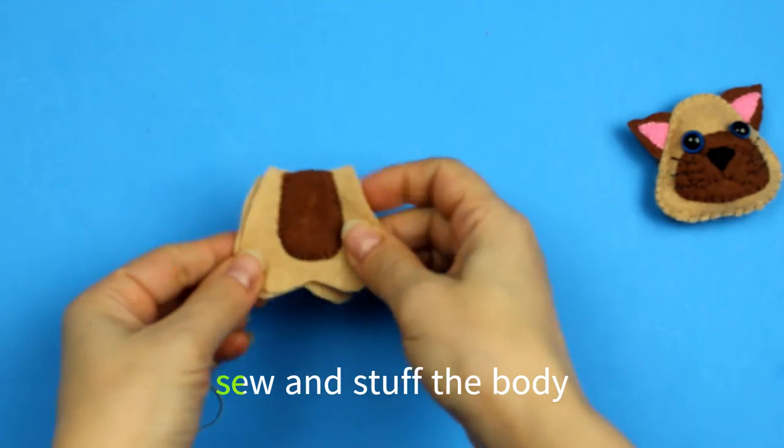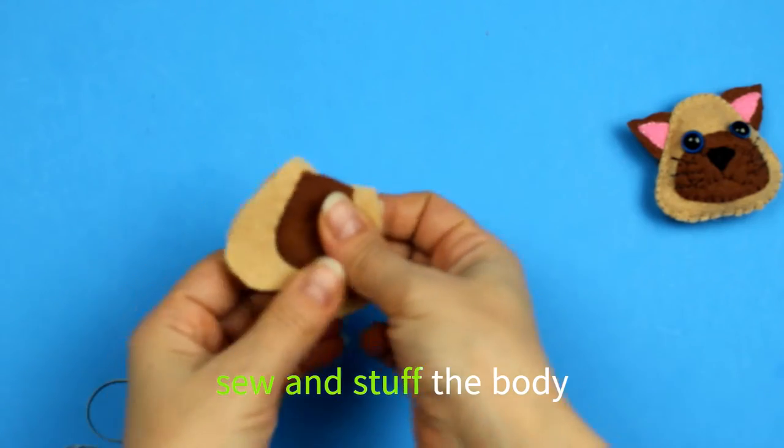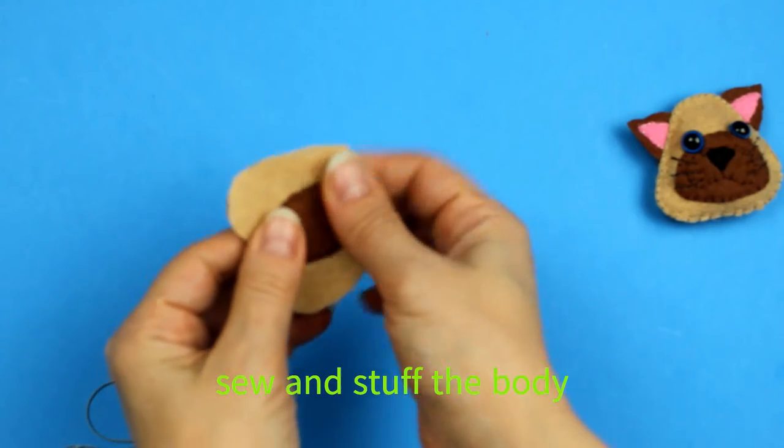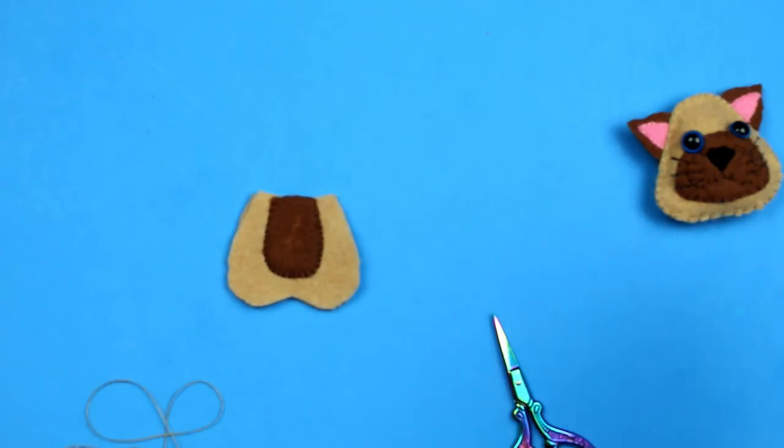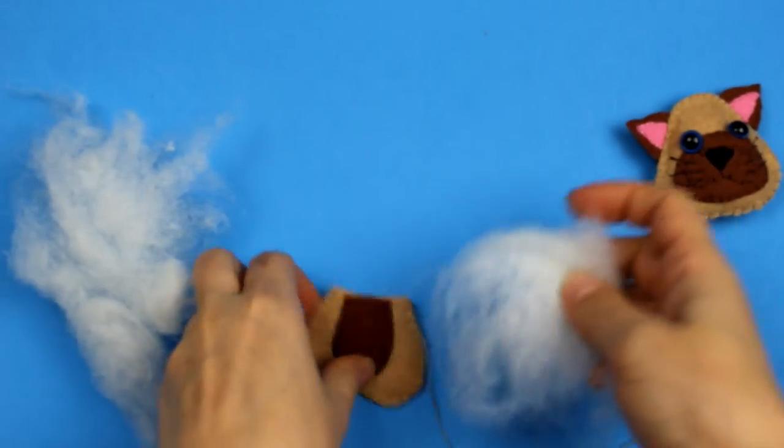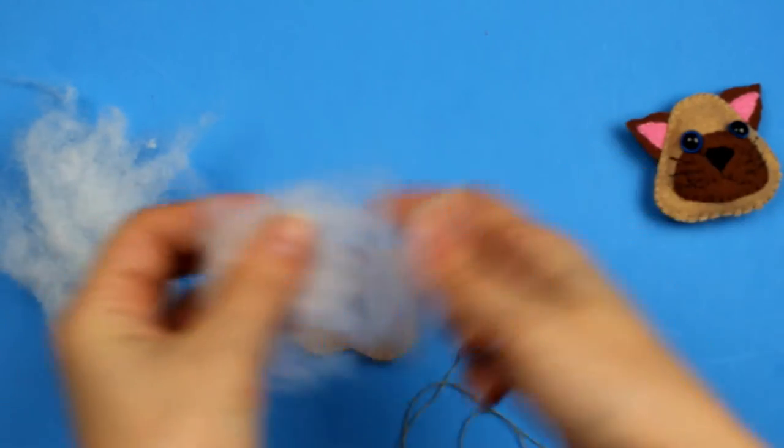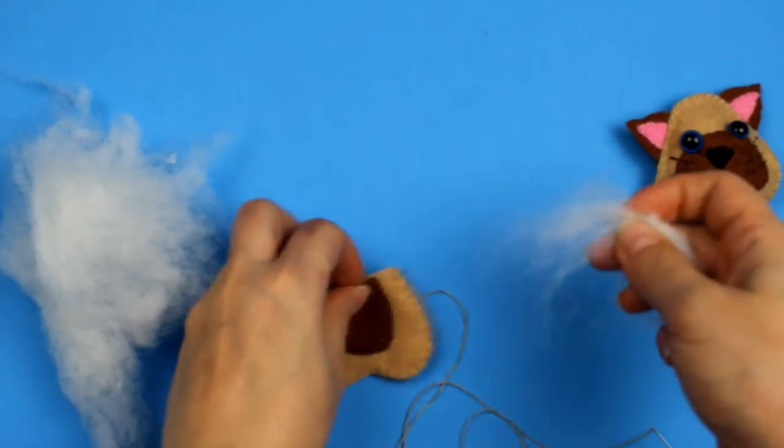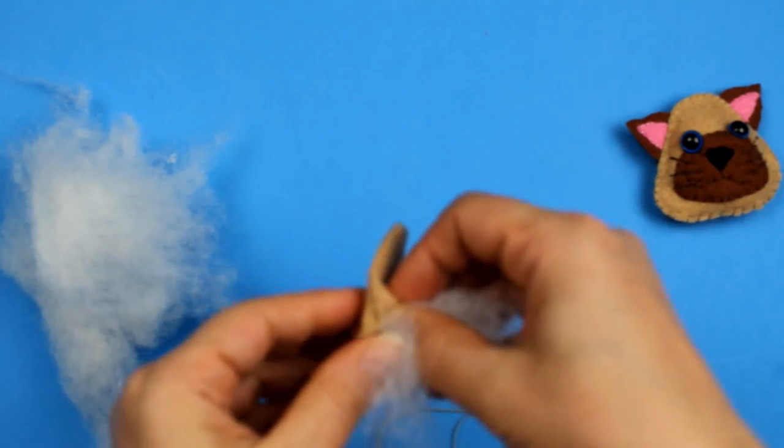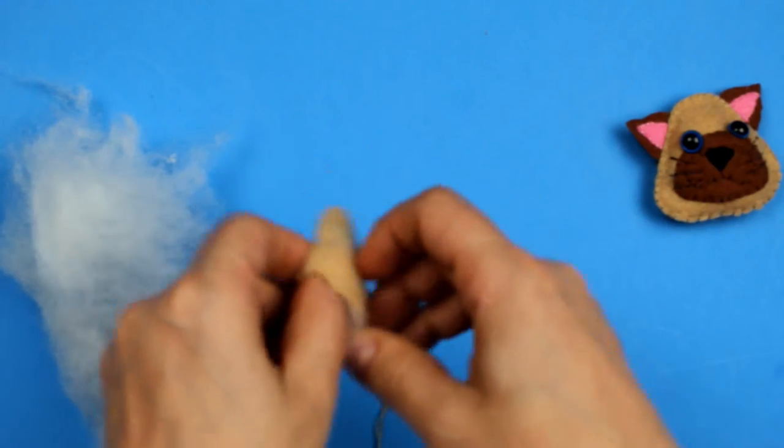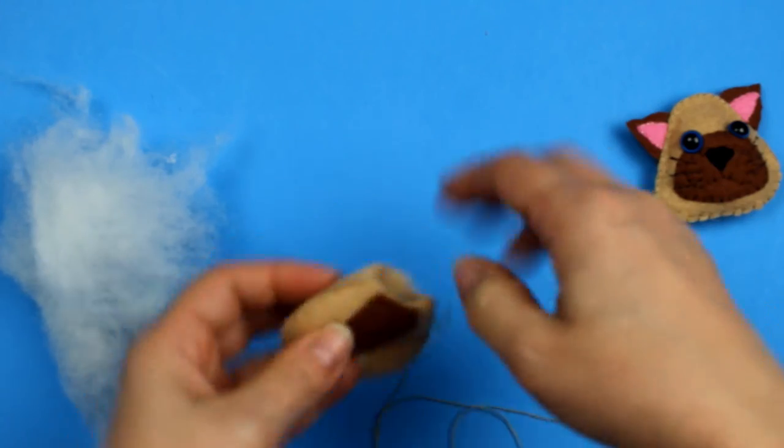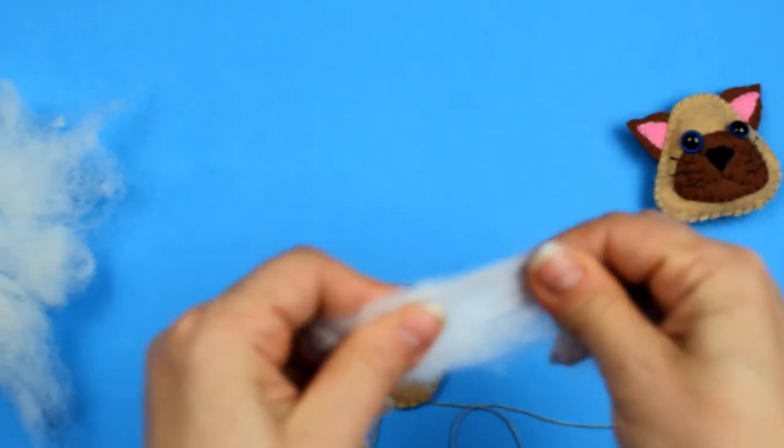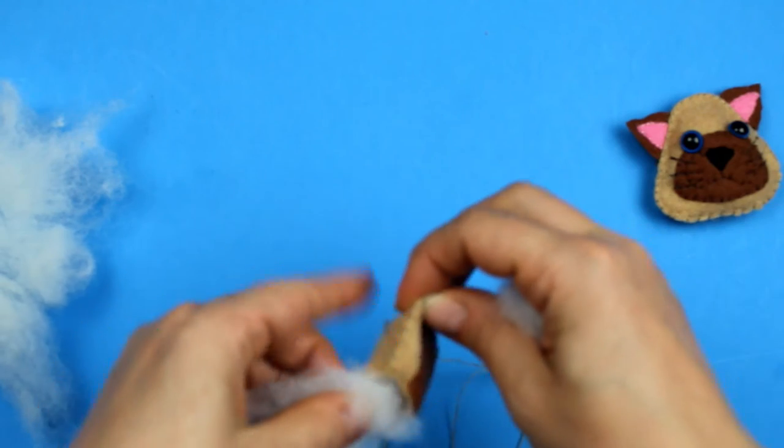Now we're gonna finish the belly. We're gonna sew around and stuff it. And I like to pull the stuffing apart so that it's really thin, and it doesn't bunch up too much in one place.